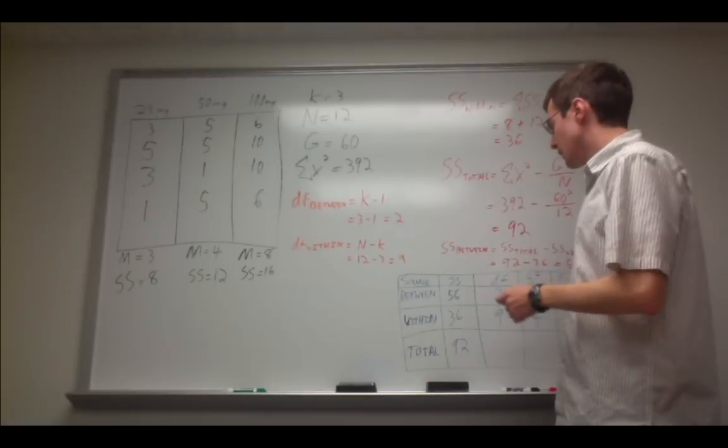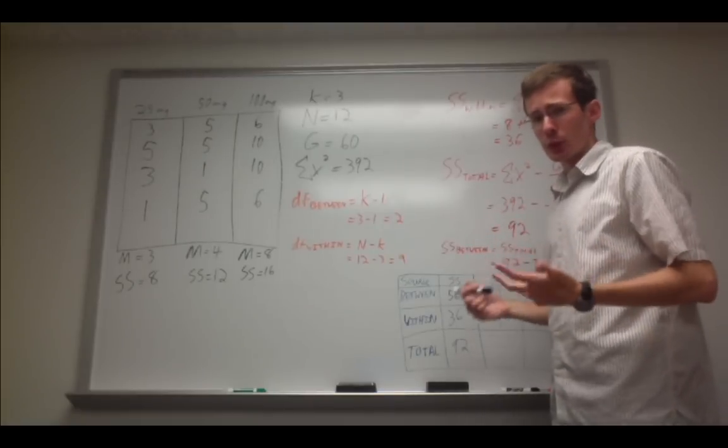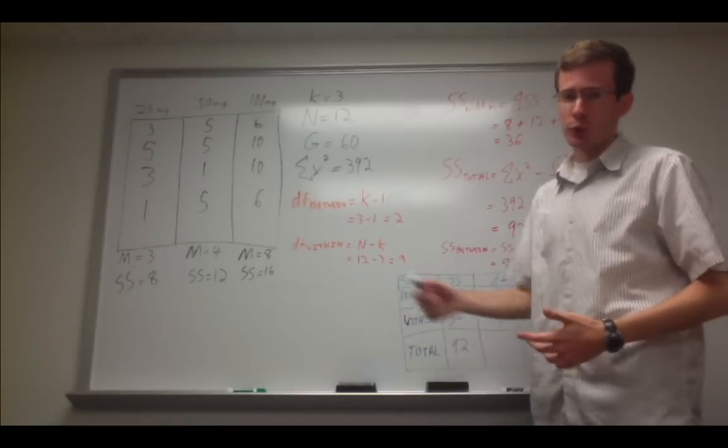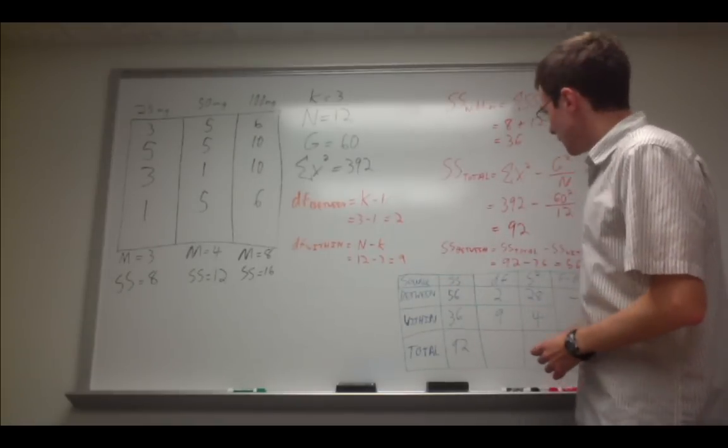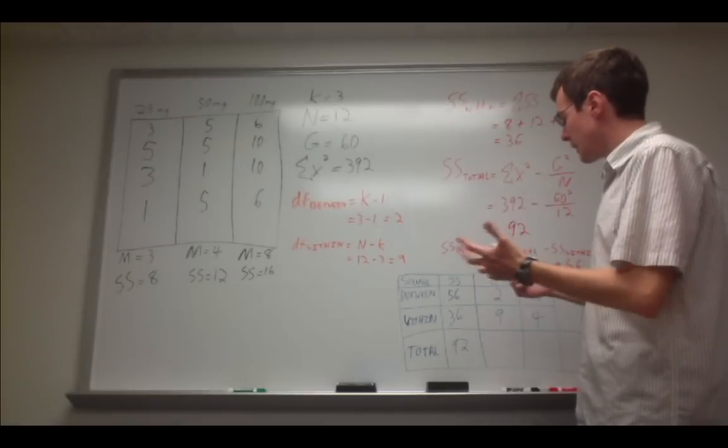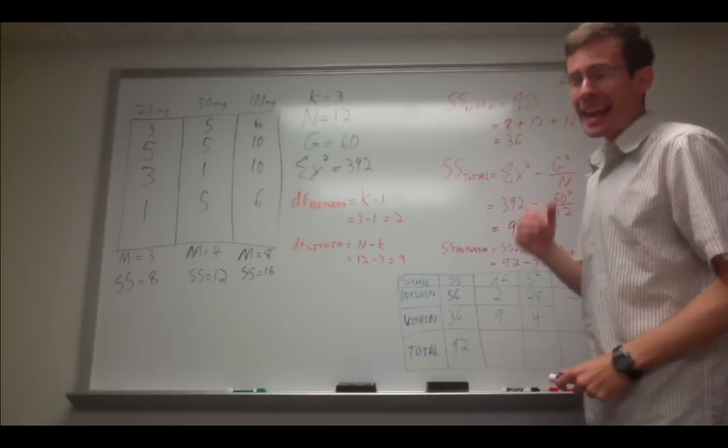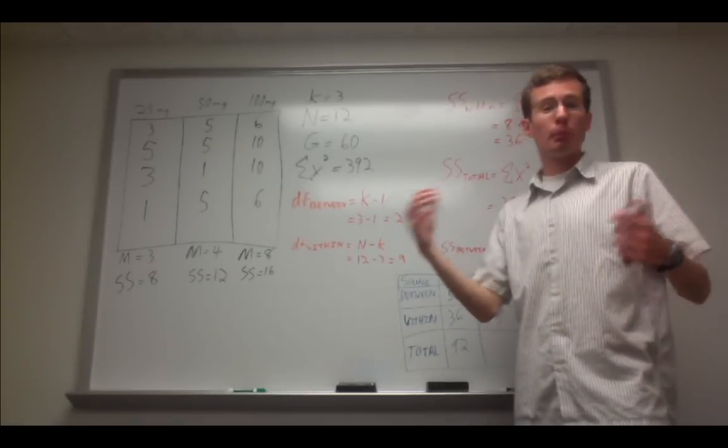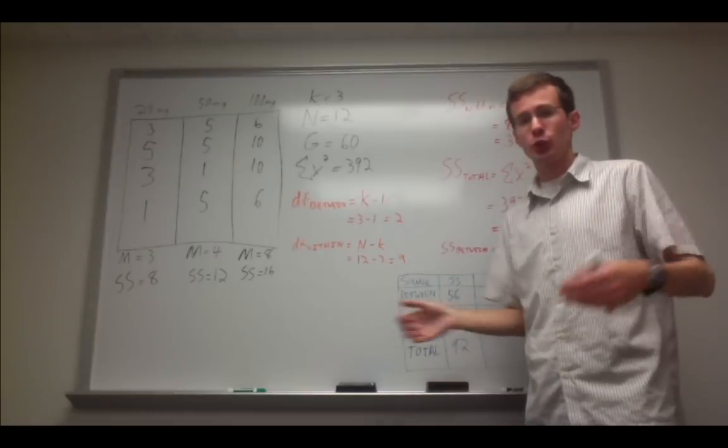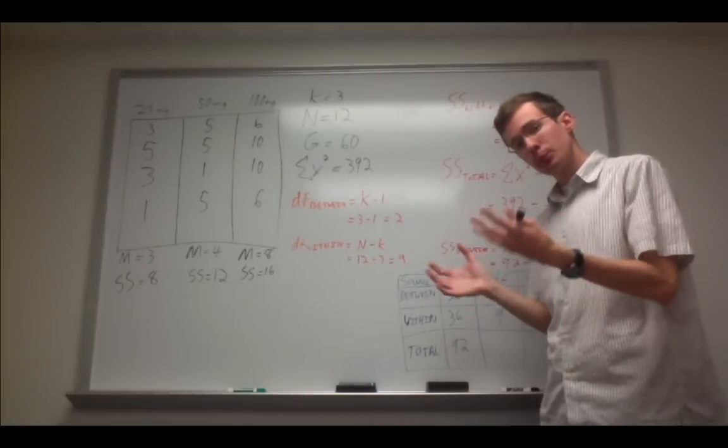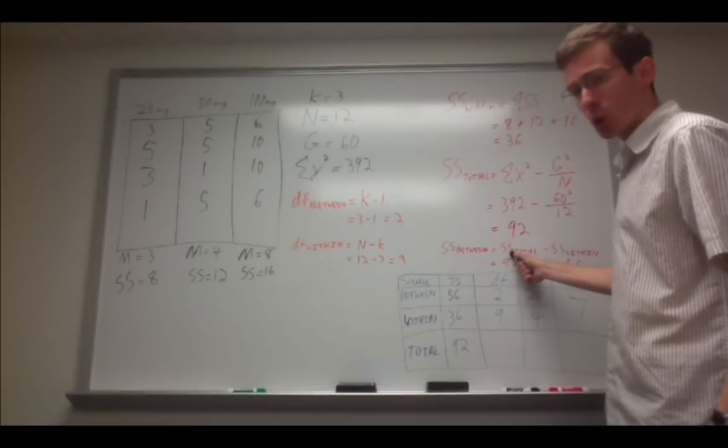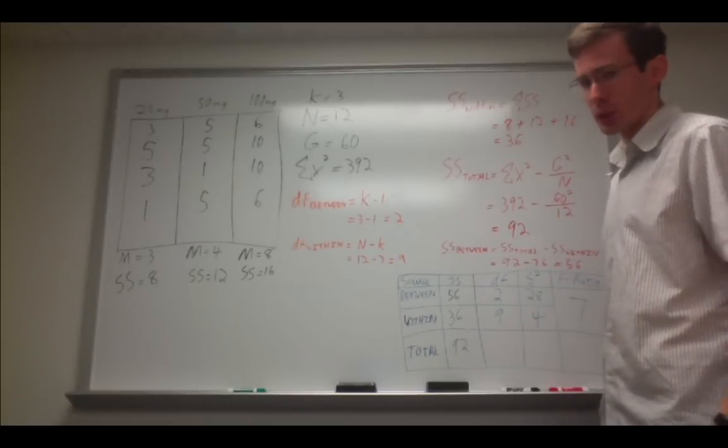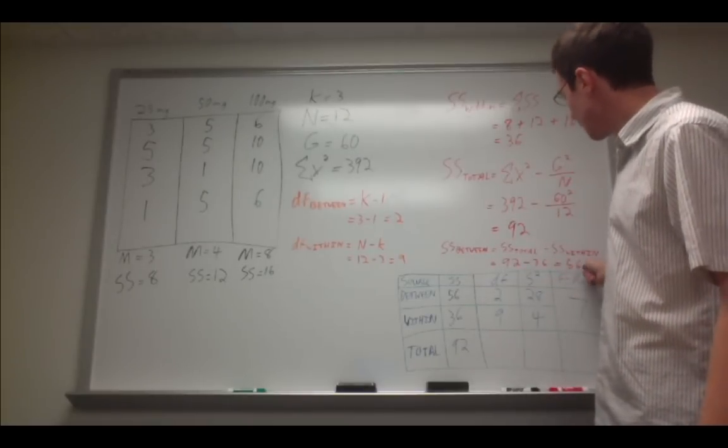The reason I did that is because it makes calculating the sums of squares between much easier. There's another formula, but it's pretty complicated, and I prefer not to use it. So I just take advantage of the fact that SS total is the sums of squares between plus the sums of squares within. You simply rearrange it, and you have sums of squares between equals sums of squares total minus sums of squares within, which in this case is 56.